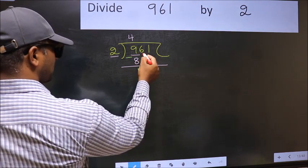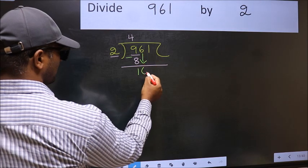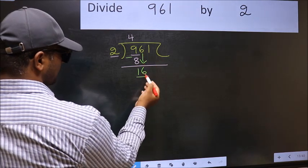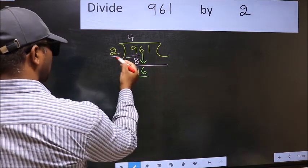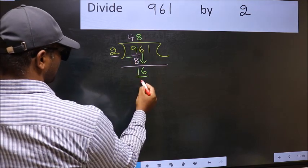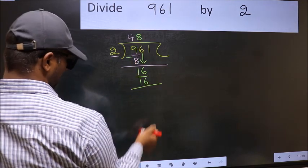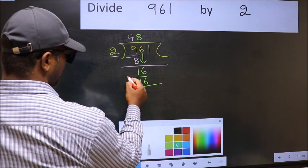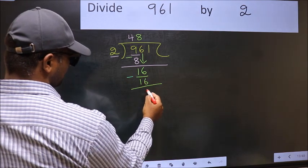After this, bring down the beside number. So 6 down. Now 16. When do we get 16 in 2 table? 2 eights, 16. Now you should subtract. 16 minus 16, 0.